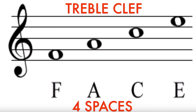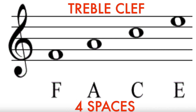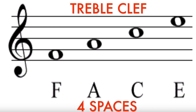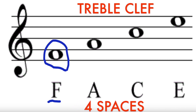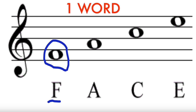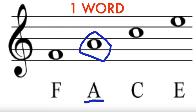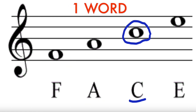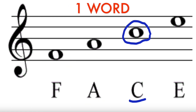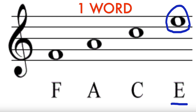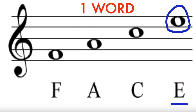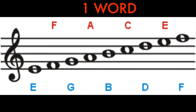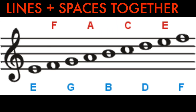Then we have the four spaces in between the lines. We have one word: FACE. The first space is F, second space A, third space C, and fourth space E.